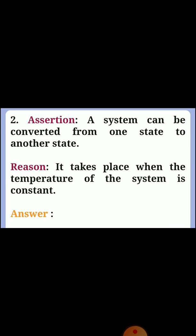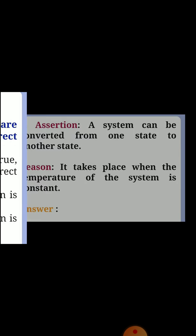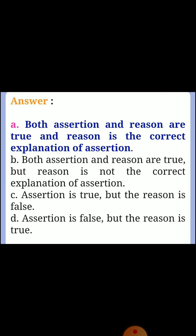Question 2: Assertion — A system can be converted from one state to another state. Reason — It takes place when the temperature of the system is constant. Answer A: Both the assertion and reason are true and reason is the correct explanation of assertion.